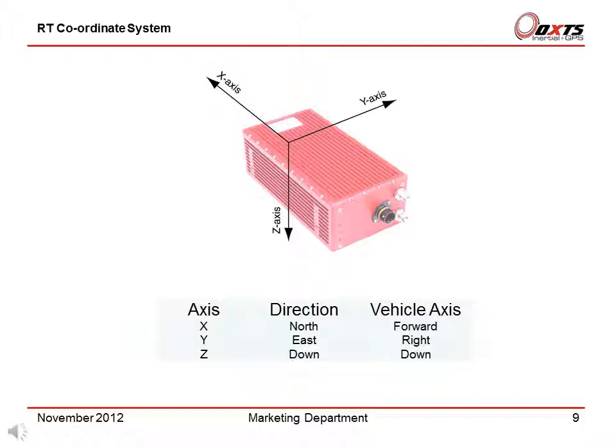Now we shall look at the RT coordinate system. The conventions used by the RT are those adopted by most navigation systems. Engineers who work with vehicles tend to have the z axis pointing up rather than down, and therefore the y axis pointing left rather than right. Using the RT mount, it is common to mount the RT with the z axis pointing forward in the vehicle and the y axis pointing left relative to the car's forward motion. It is important to note the orientation of these axes within the car for use during software configuration, and to ensure that the correct orientations are applied to the RT outputs if your coordinate system is different.